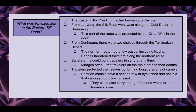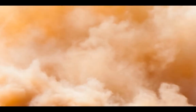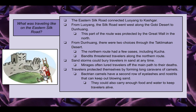What was traveling like on the Eastern Silk Road? The Eastern Silk Road connected Luoyang to Kashgar. From Luoyang, the Silk Road went west along the Gobi Desert to Dunhuang. This part of the route was protected by the Great Wall in the north. From Dunhuang, there were two choices through the Taklamakan Desert. They could take the northern route, which had a few oases including Kucha, but bandits threatened travelers along the northern route. Sandstorms could bury travelers in sand at any time, and mirages often lured travelers off the main path to their deaths.